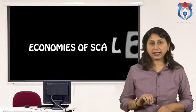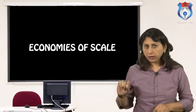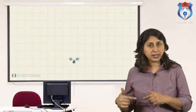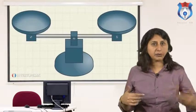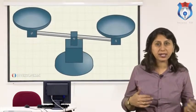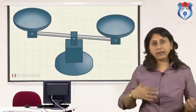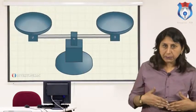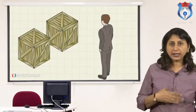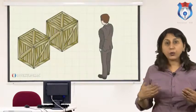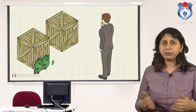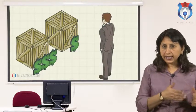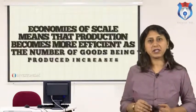Economies of scale. Economies of scale means that production becomes more efficient as the number of goods being produced increases. When more units of a good or service can be produced on a larger scale yet with, on average, less input costs, economies of scale (ES) are said to be achieved.